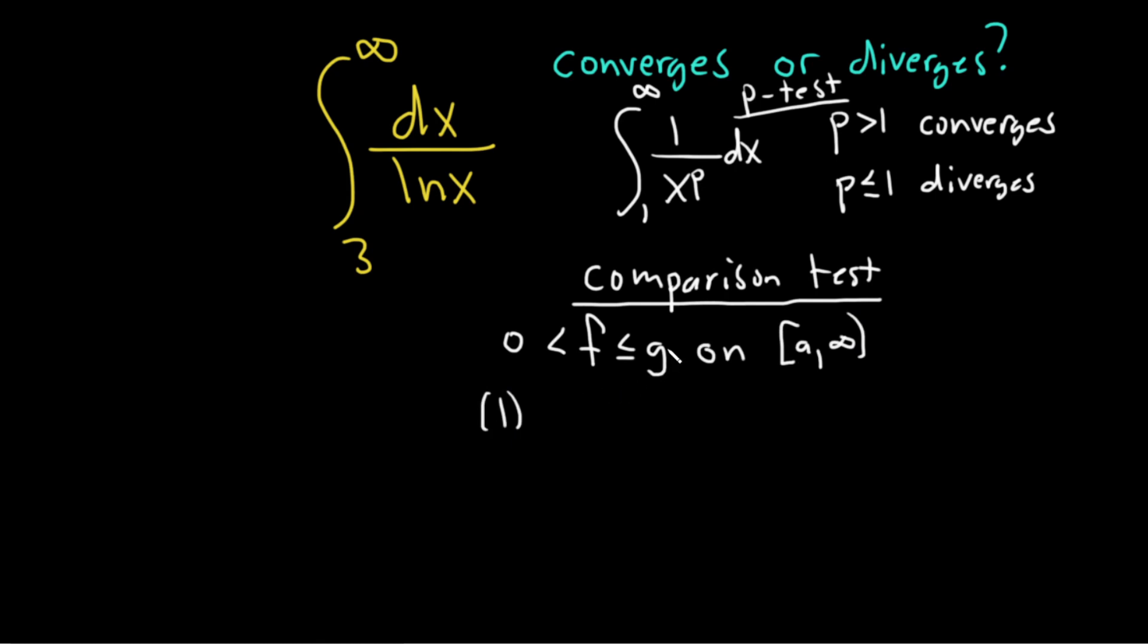The first condition says if the bigger one converges, so if the integral of the bigger one converges, I'll just say g from a to infinity, if this one converges, then the smaller one also converges. The smaller one will also converge.